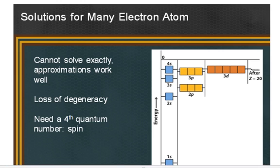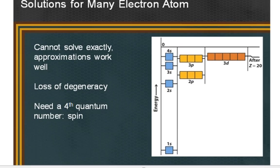But as it turns out, the solutions for many electron atoms are impossible to solve completely, and so we have to use approximations for the hydrogen atom.